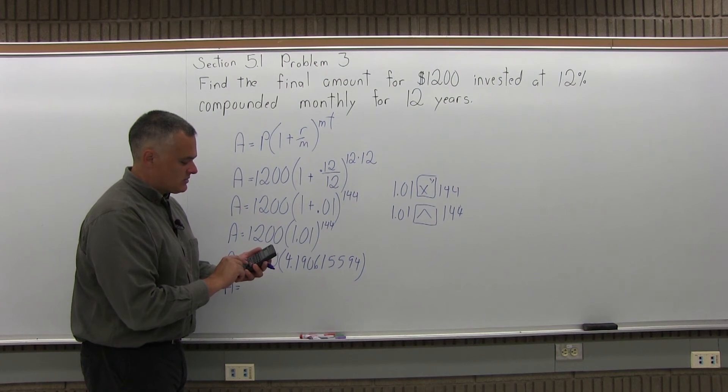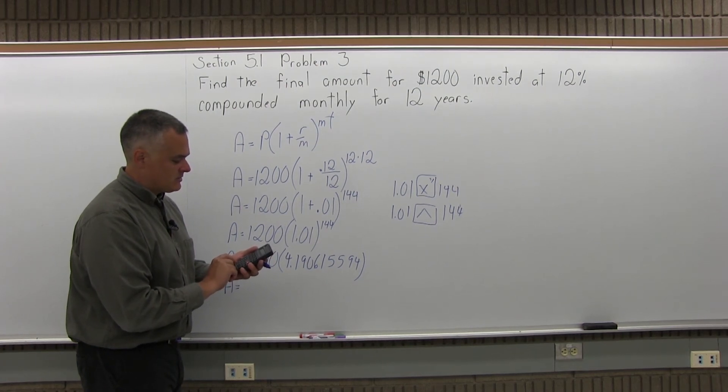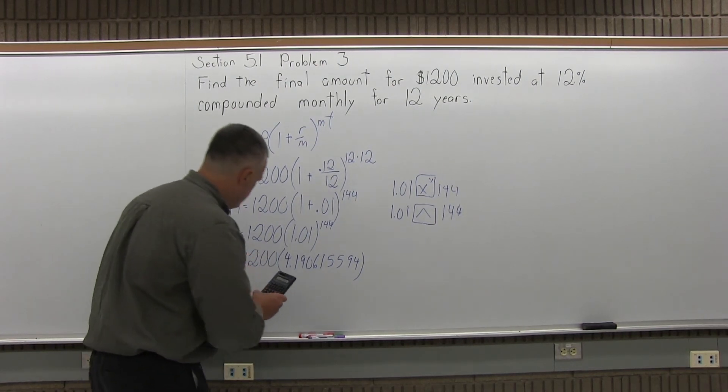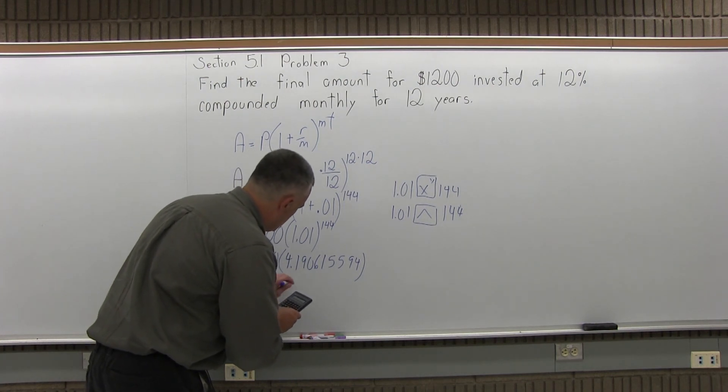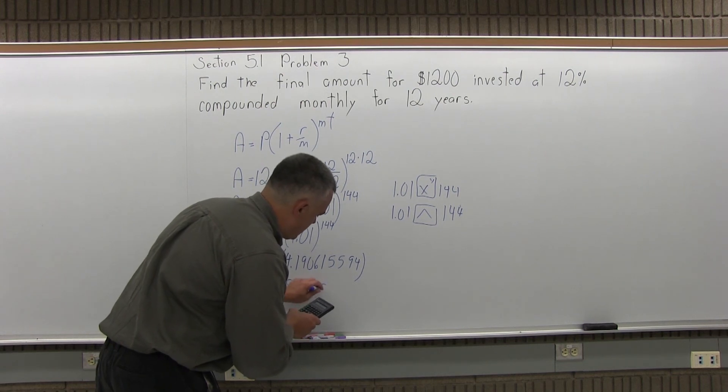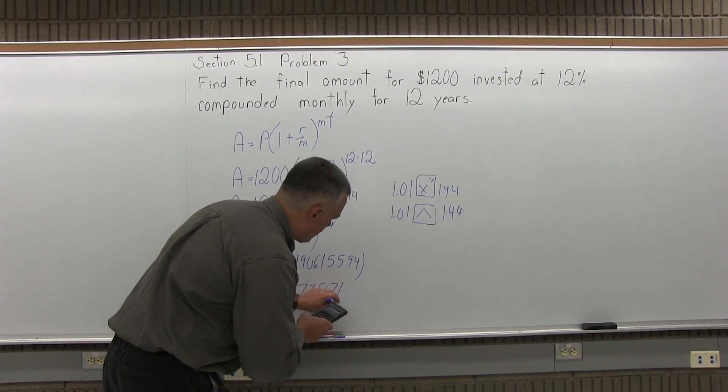So the number that's on the screen now times the 1200 that was in front of the parentheses. And the calculator says 5028.738712.